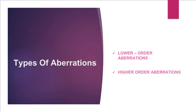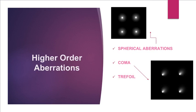There are two types of aberrations: lower-order aberrations and higher-order aberrations. Higher-order aberrations of the eye are unable to be corrected by spherical or cylinder corrections, and include spherical aberrations, coma, and trefoil.